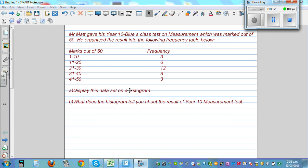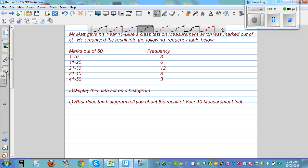One is display this data set on a histogram, and then tell what does the histogram tell. So let me talk about the table. Here you have got marks out of 50 and frequency. What does this mean?